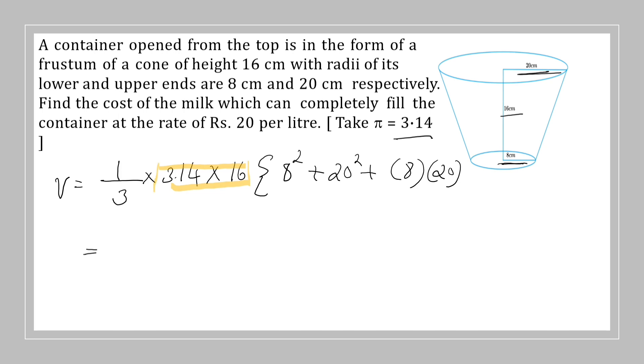16 into 3.14: 16 fours are 64 carry 6, 16 ones are 16 plus 6 is 22 carry 2, 16 threes are 48 plus 2 is 50, so 50.24 divided by 3. We need not operate on this since we may get a good number in the next step. 8 square is 64, 20 square is 400.